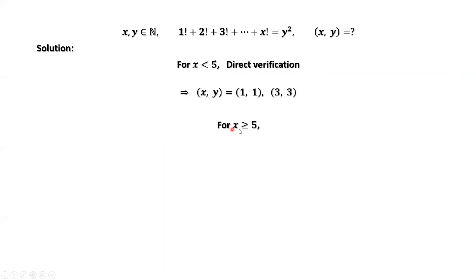For x is bigger than or equal to 5, 1 factorial plus 2 factorial plus 3 factorial plus 4 factorial equals 33, which ends with digit 3. The last digit is 3.